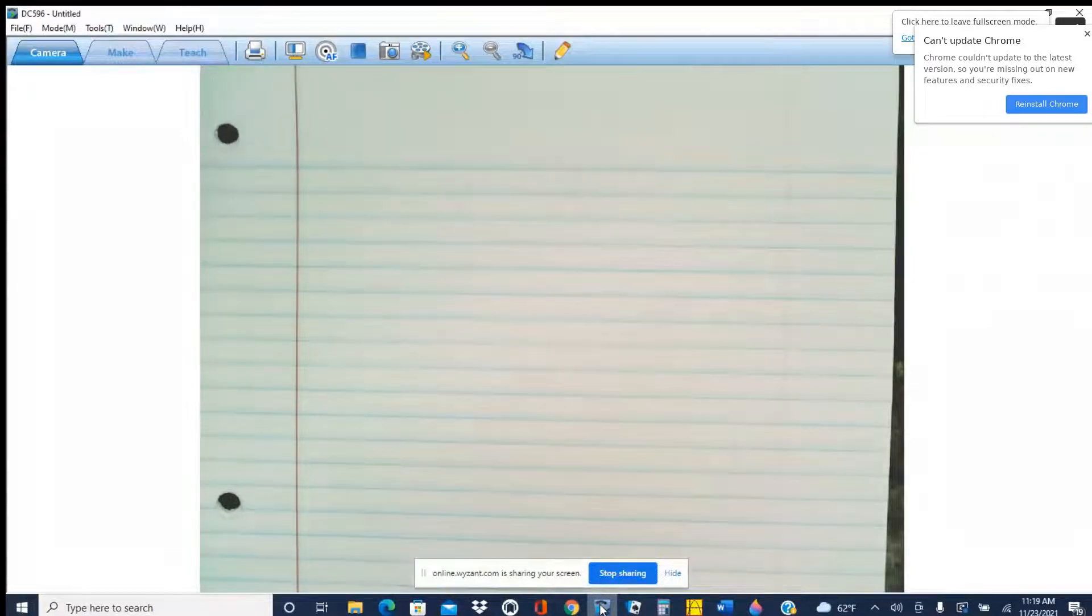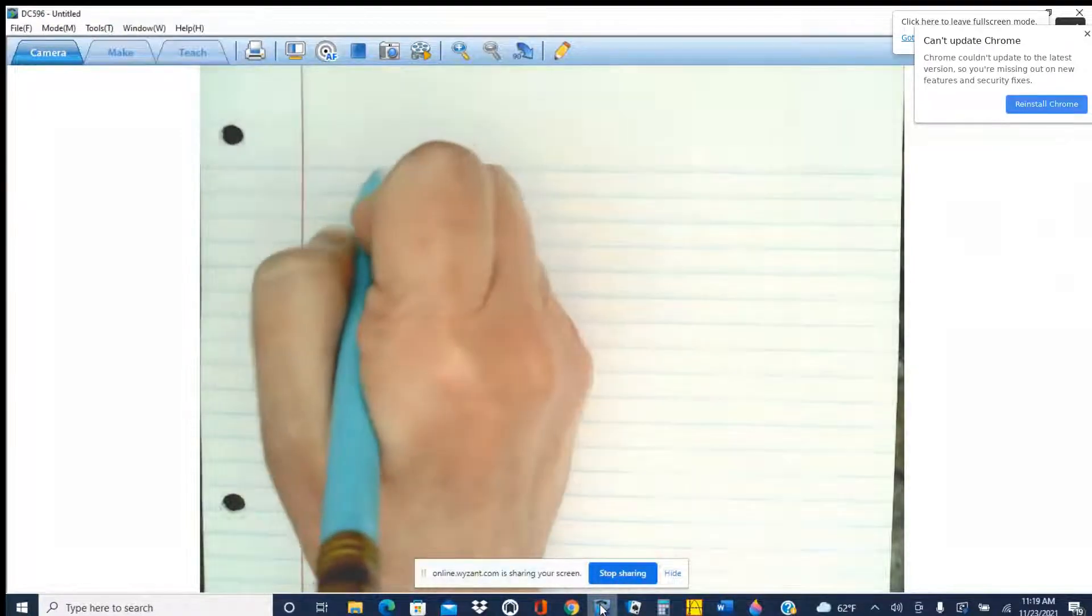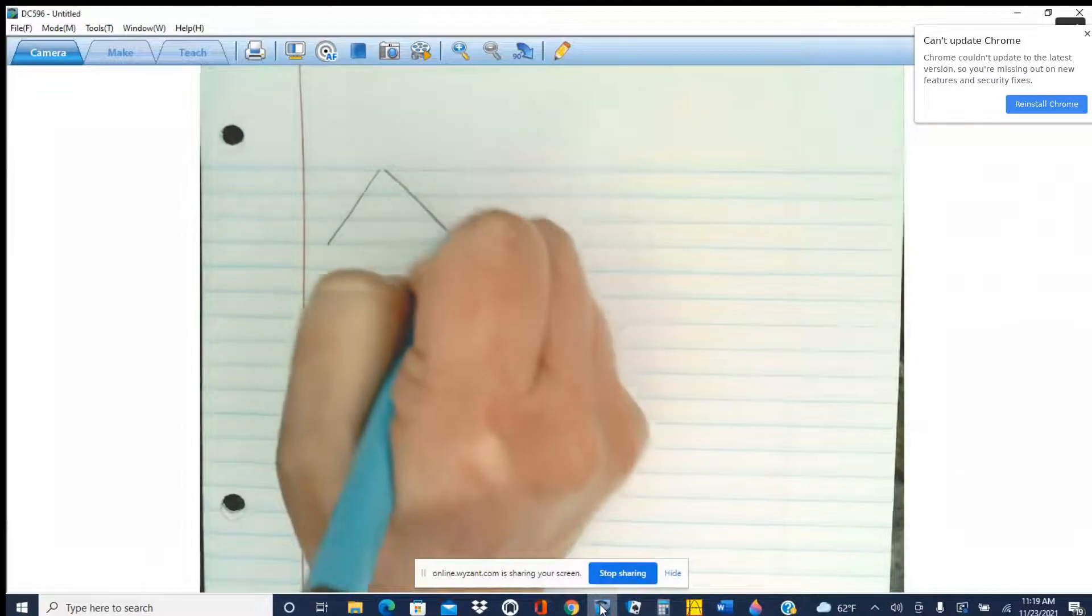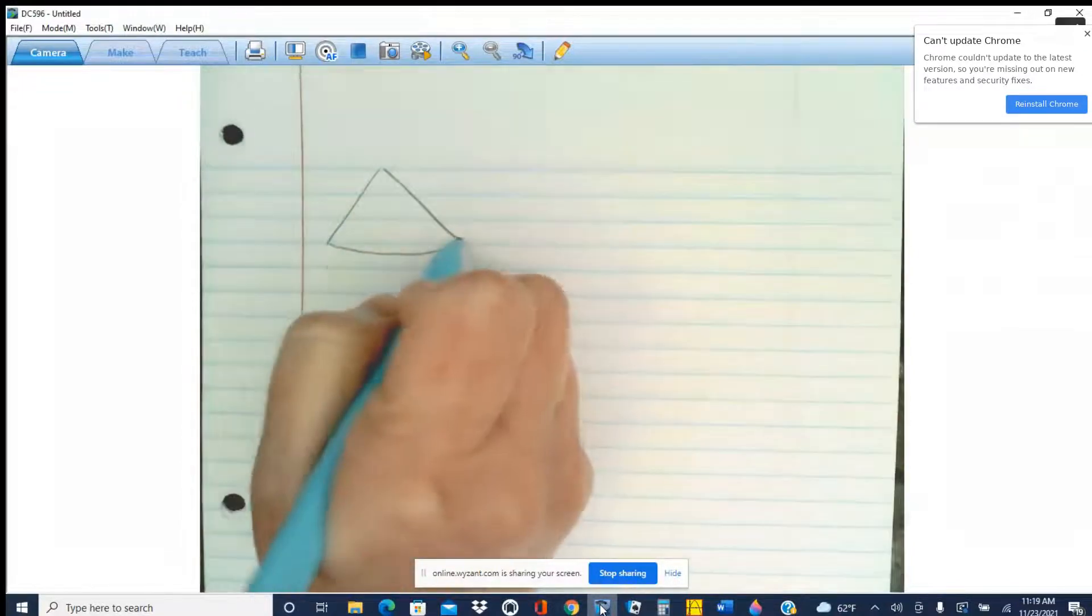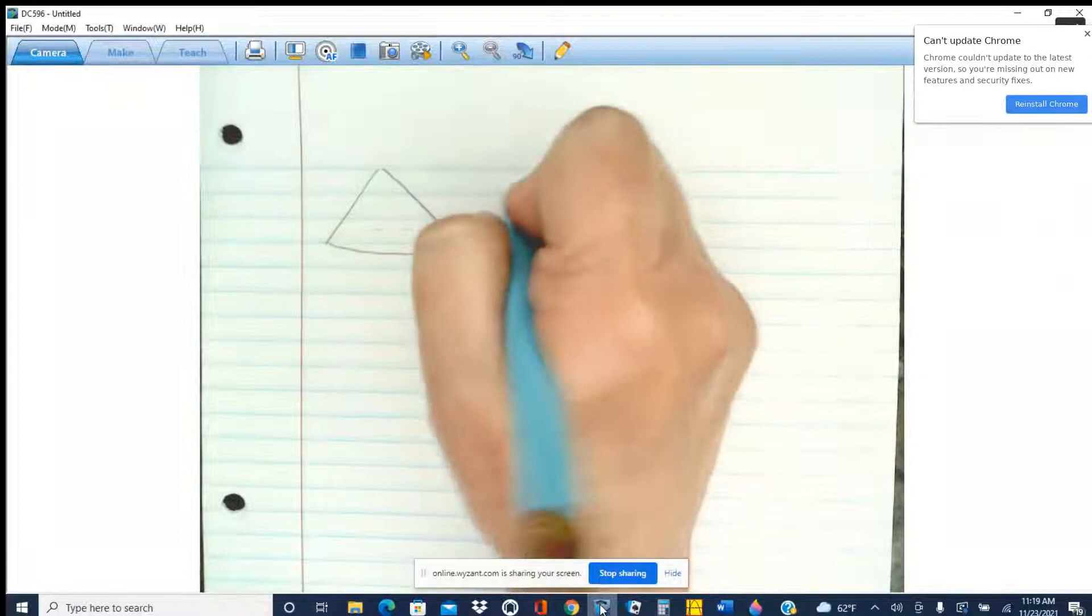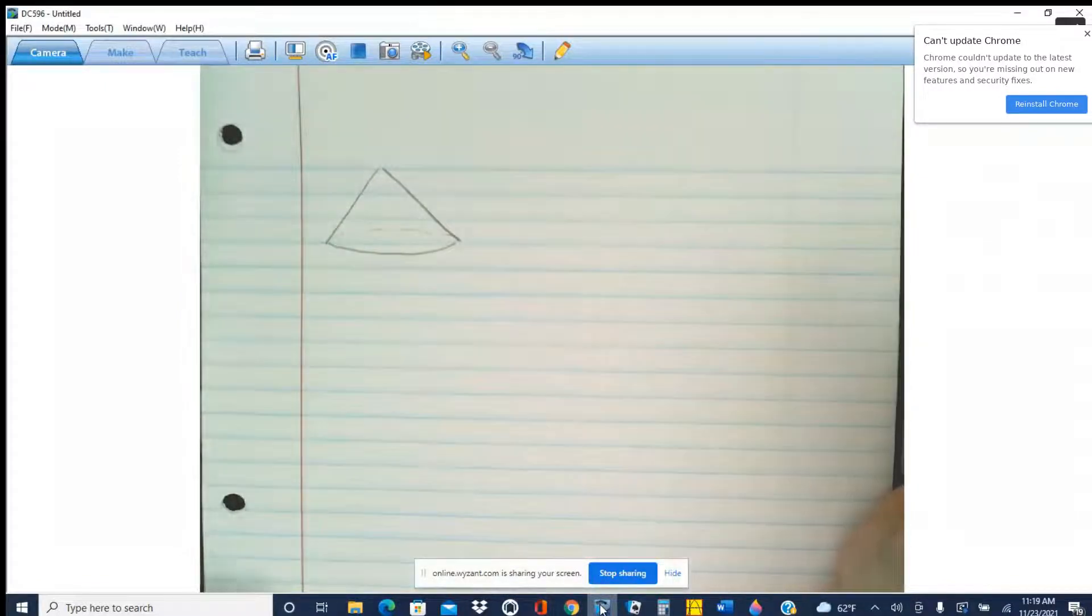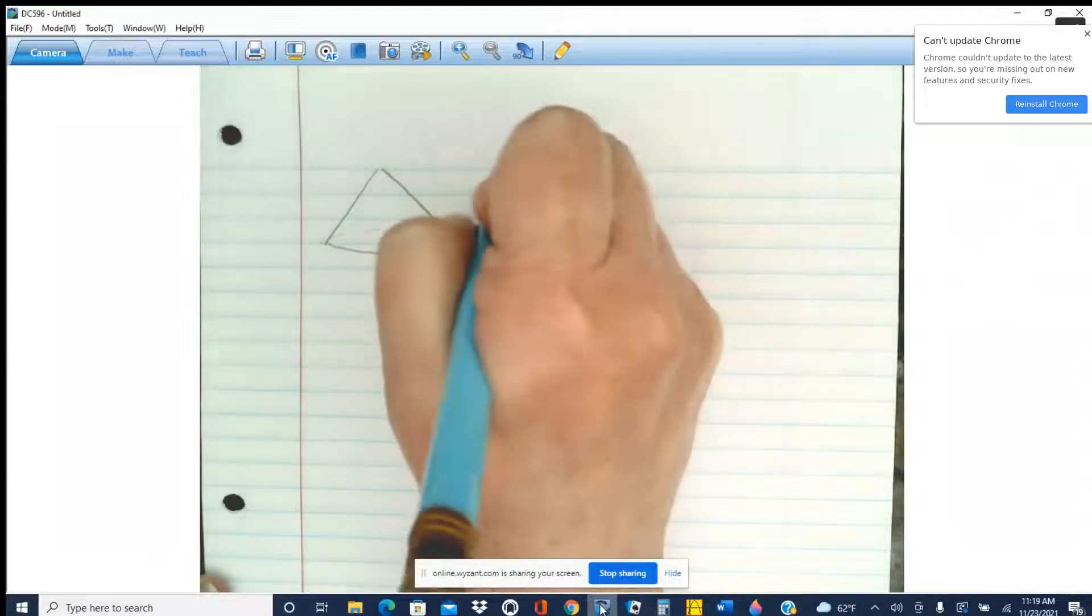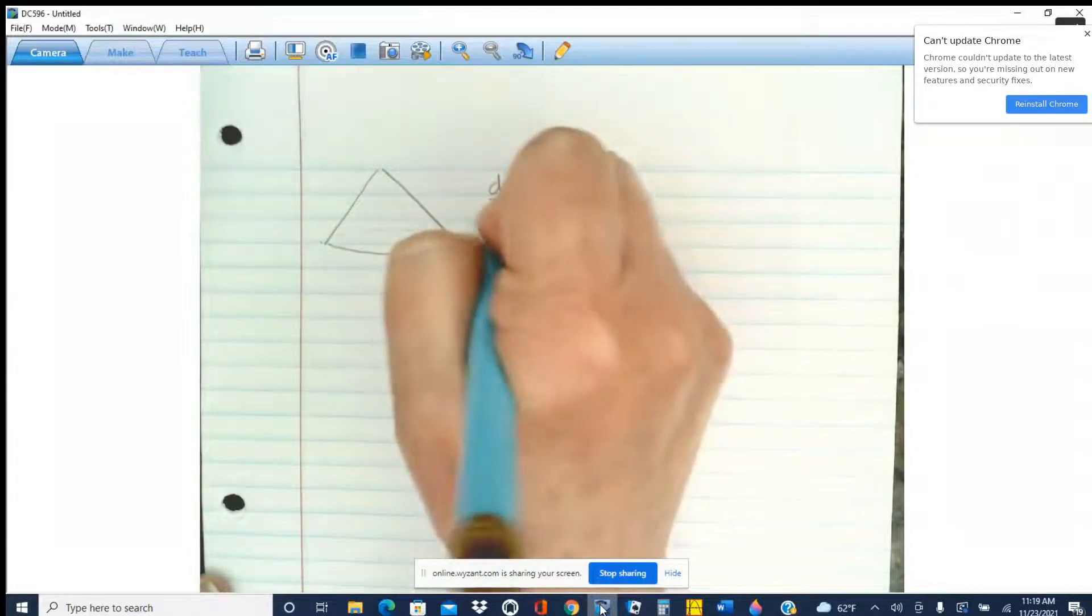Okay, we're given that we have a conical pile of sand. So it's going to look something like this. We're given that sand is being added to the sand pile at a rate of 28 cubic feet per minute. So that's a rate of change of volume.